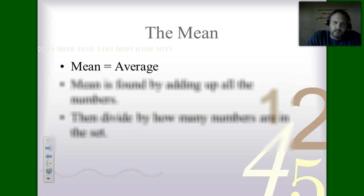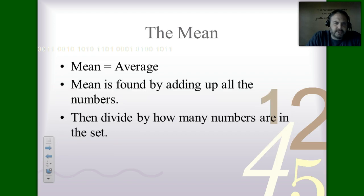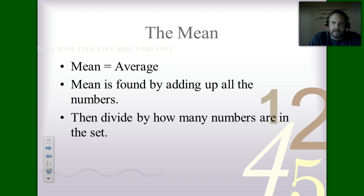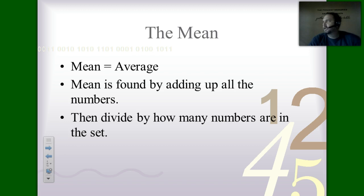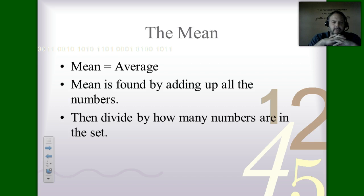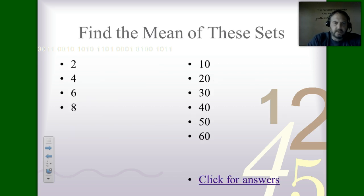To find the mean, all we have to do is add up all the numbers in the data set — we find the sum. Sum means the answer to an addition problem. Then after we've found that sum, we divide it by however many numbers are in the set. If we have 15 numbers in the set we divide by 15, if there are 100 numbers we divide by 100.